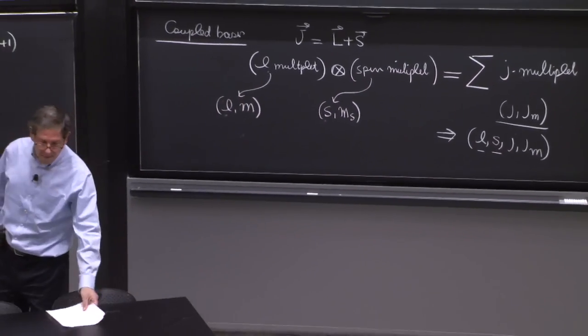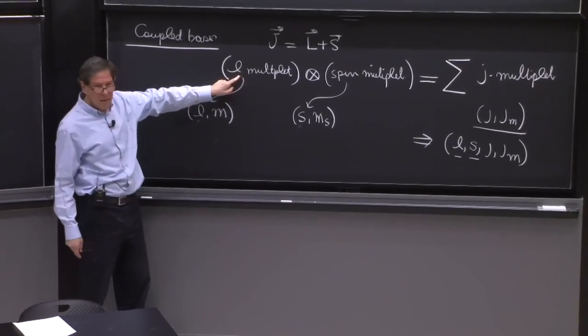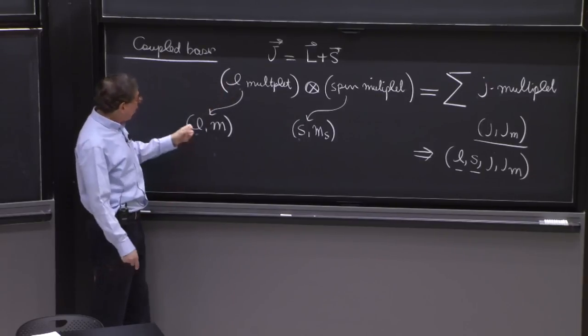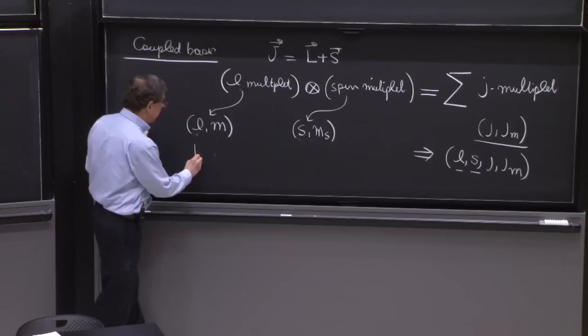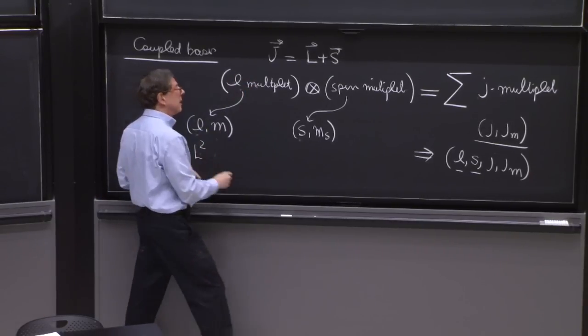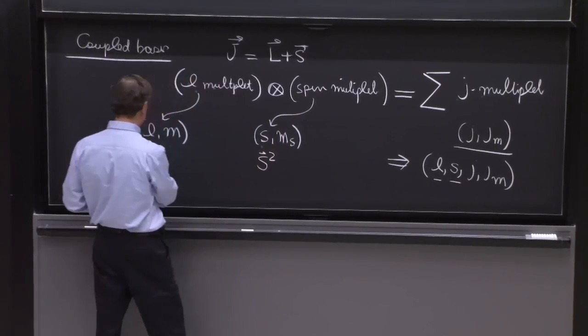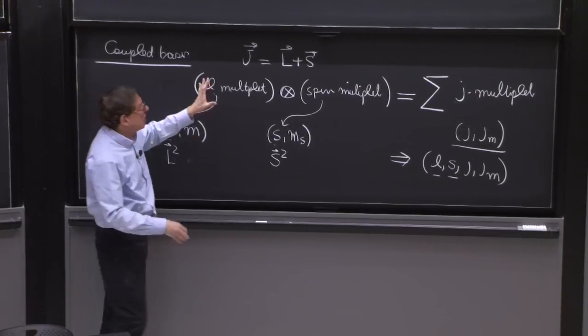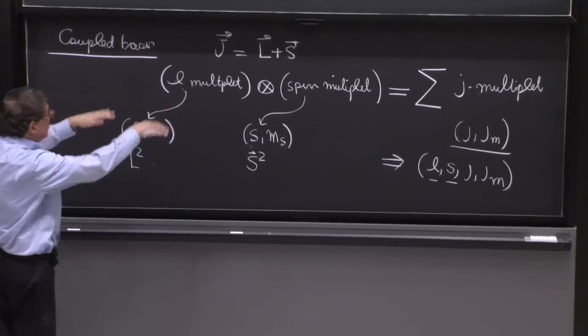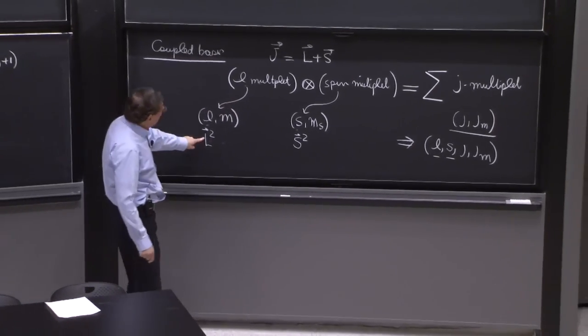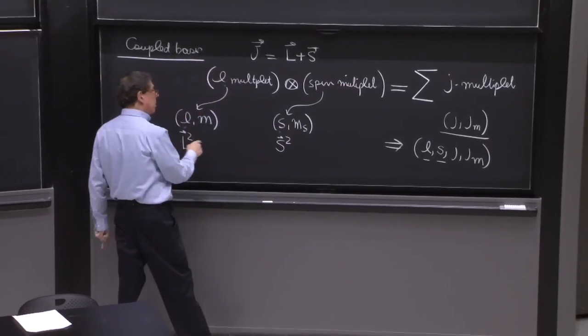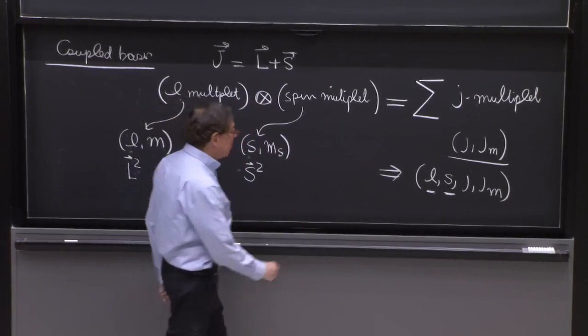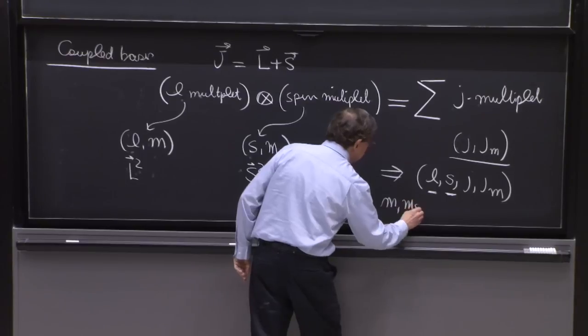This may sound a little funny, but every state here had the same l eigenvalue. They were, for example, l equal 3. So all the states have l equal 3. All the states are eigenstates of l squared eigenstates. All the states here are l squared eigenstates. And all the states here are s squared eigenstates with the same eigenvalue. So if you multiply them and you rearrange them, because that's all this addition of angular momentum is. It's just rearranging the states. You still have that all the states that are here have the same l squared and the same s squared. So l and s are good quantum numbers here. The things that are not good quantum numbers are m and ms are not good.